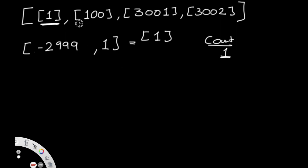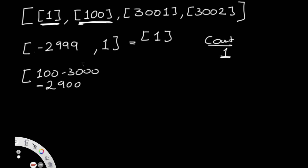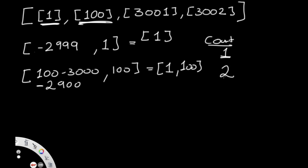Now let's go to our next ping at 100 milliseconds. The range for this is 100 minus 3000, which is negative 2900, going all the way up to 100. Looking back, the value one falls in this range, and 100 is also in this range. So our count now becomes two — that's what we return.